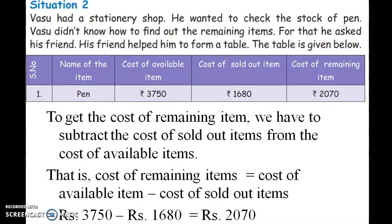At the same time, Vasu had a stationery shop. He went to check the stock of a pen. The pen stock was on the shelf but Vasu didn't know how to find the remaining items. His friend helped him with a table: serial number, name of the item, cost of available item, cost of sold item, and cost of remaining item. Cost of remaining item is equal to cost of available item minus cost of sold item.